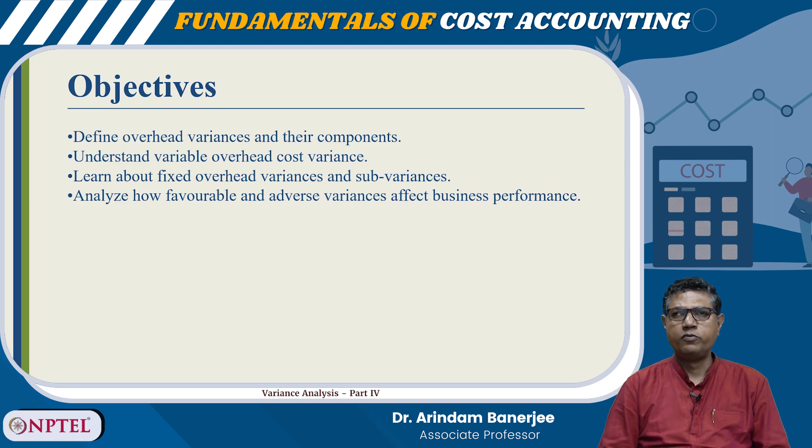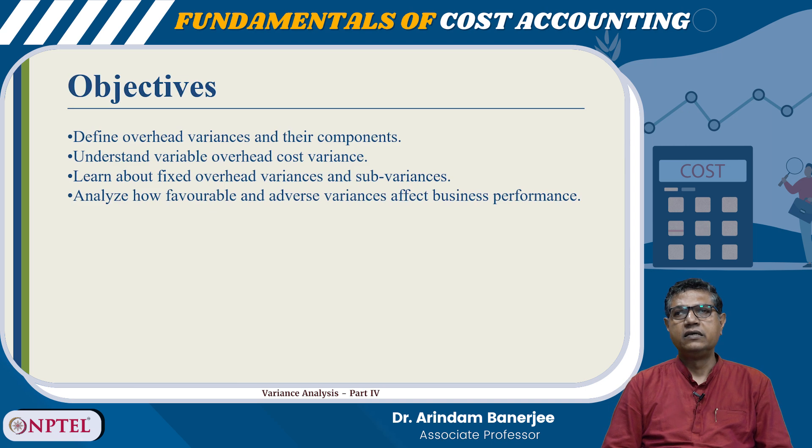In this session, what we are trying to assess is whether your actual overhead cost and the standard overhead cost have any deviation or not. If that deviation is favourable or unfavourable, if it is favourable then how much, if it is unfavourable then how much. If the deviation is too large, then we need to dig deeper into the causes and try to find out why it happened and how it is to be eliminated. So these are the objectives: define overhead variances and their components, understand variable overhead cost variance, learn about fixed overhead variances and sub-variances, and analyze how favourable and adverse variances affect business performance.